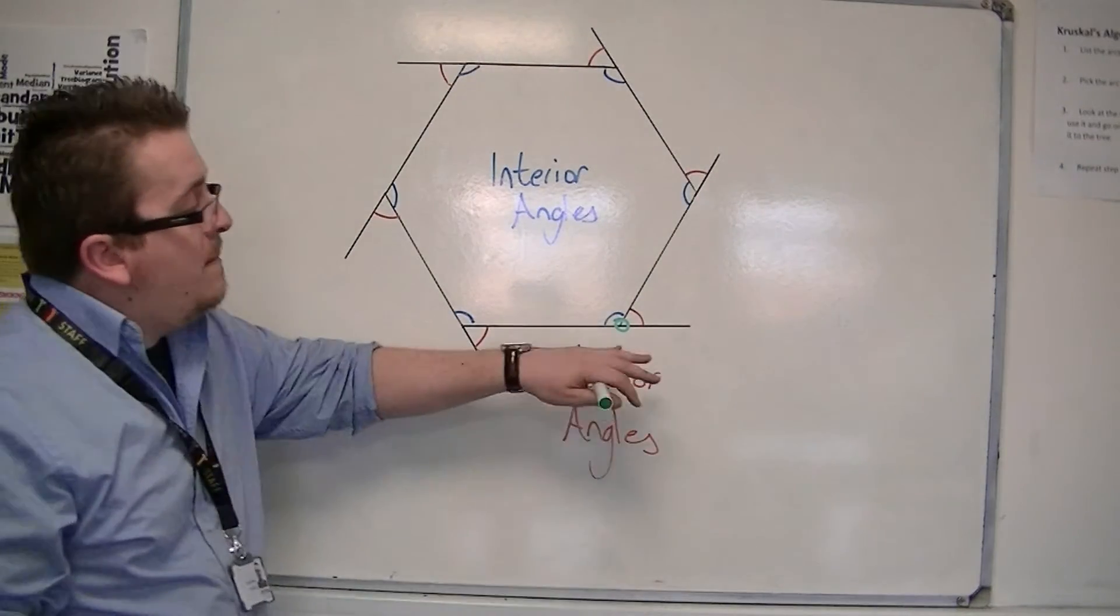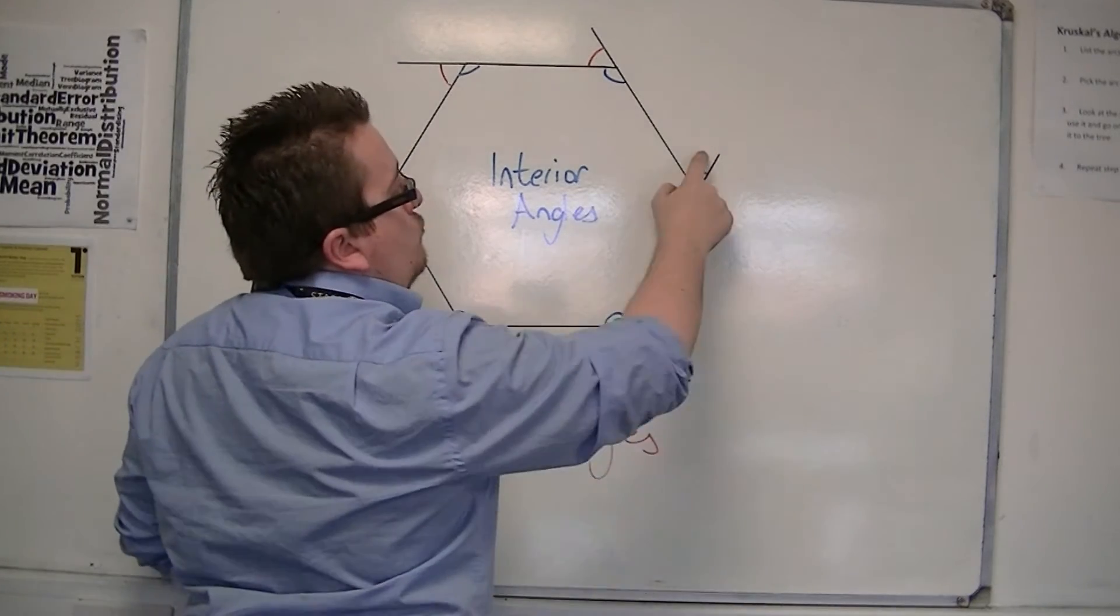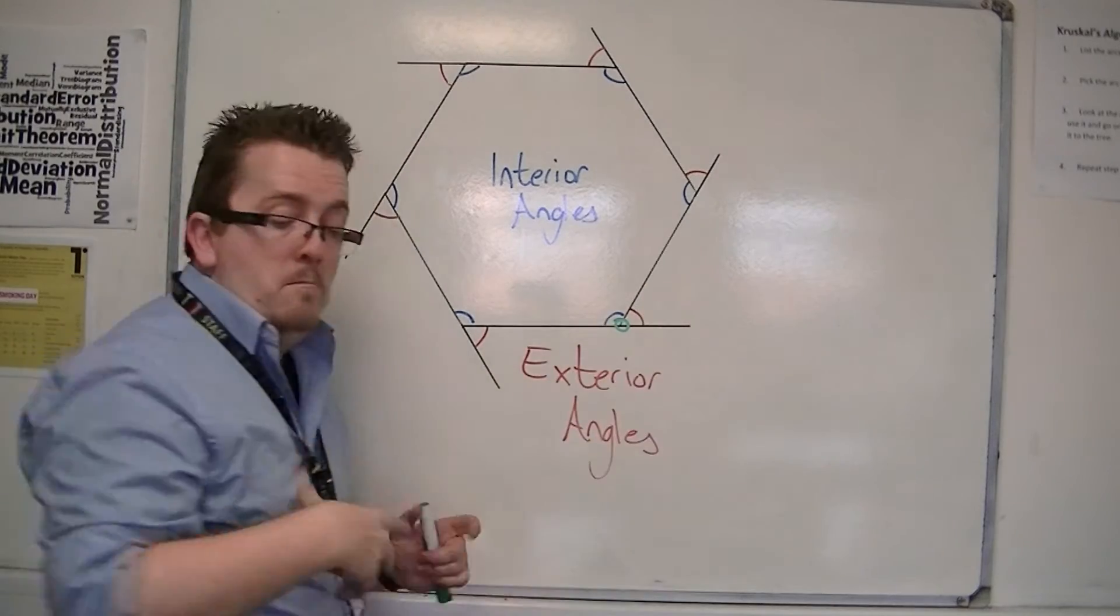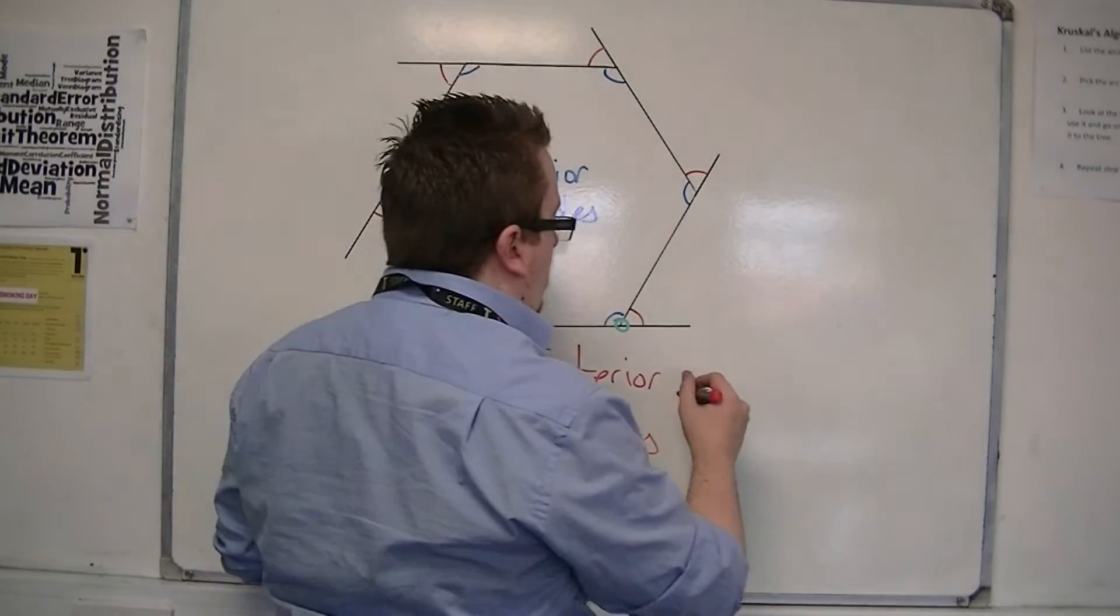So that must mean that each of these angles that represents the turn, as he goes, must add up to 360 degrees.